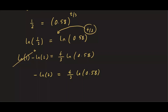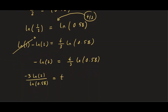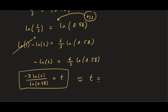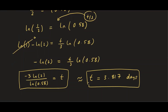Solving for T: multiply both sides by 3 and divide by ln(0.58), giving T = −3·ln(2) / ln(0.58). This is actually a positive value because ln(0.58) is negative, so the negatives cancel. Using a calculator, T ≈ 3.817 days — that's the number of days for the substance to decay to half its original amount.